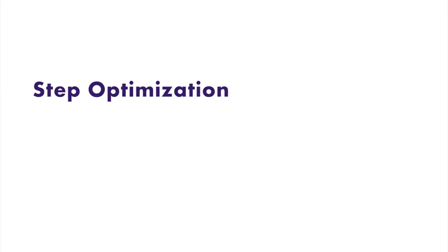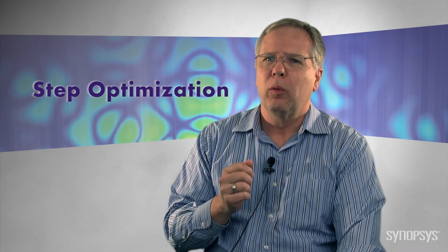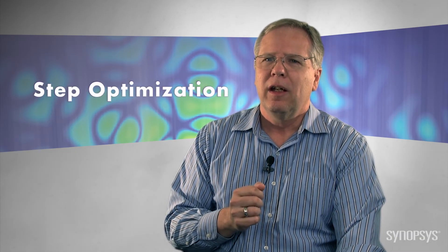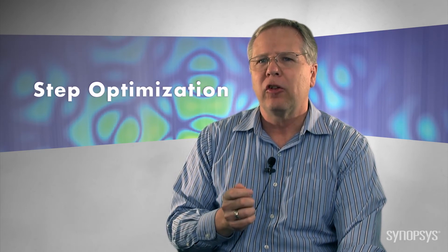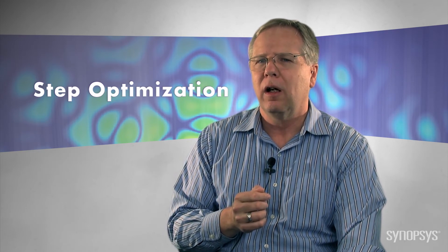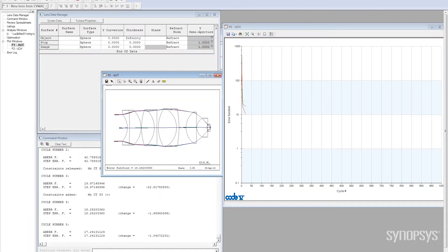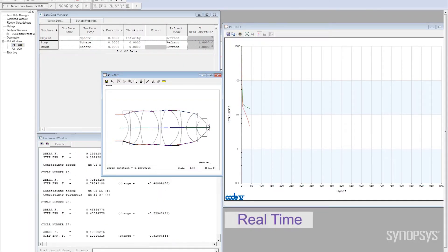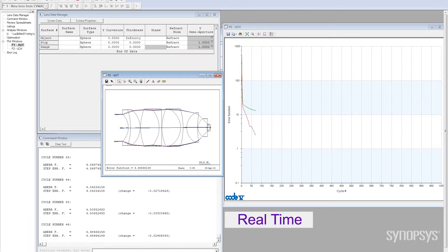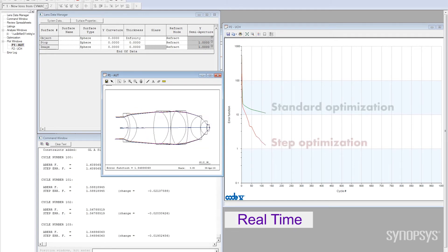Another newly introduced algorithm is what we call step optimization, and it basically is an algorithm that allows us to improve the convergence rate on many different problems. But for some systems, such as lithography and others, it can take hundreds to thousands of cycles to work its way down to the very bottom of the local minimum.